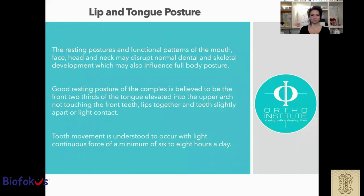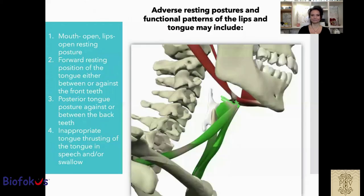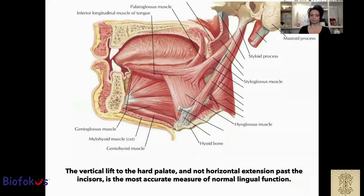The resting posture and functional pattern of the mouth, face, head, and neck may disrupt normal dental and skeletal development, which may also influence full body posture. A good resting posture of the complex is believed to be front two-thirds of the tongue elevated into the upper arch, not touching the front teeth, lips together, and teeth slightly apart or in light contact. Tooth movement is understood to occur with continuous forces of a minimum of six to eight hours a day. Adverse resting posture and functional patterns may include: mouth open, lips open resting posture; forward resting position of the tongue either between or against the front teeth; and posterior tongue posture against or between the back teeth. Inappropriate tongue thrusting in speech or in swallowing.